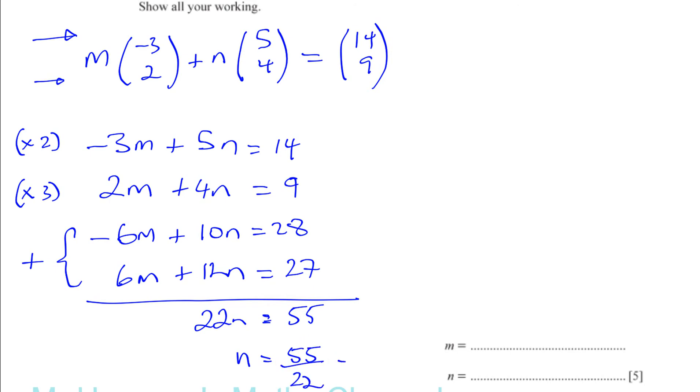And then we've got to find what m is. So we could use, for example, this equation, the second equation. We could say 2m plus 4 times 5 over 2 is equal to 9. The 2 and the 4 cancel. So we're left here with 2m plus 10 equals 9. So 2m is equal to minus 1, and m is equal to minus 1 half. So we have m equals minus 1 half and n equals 5 over 2.